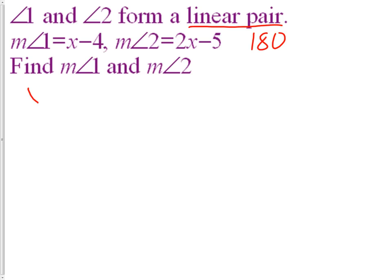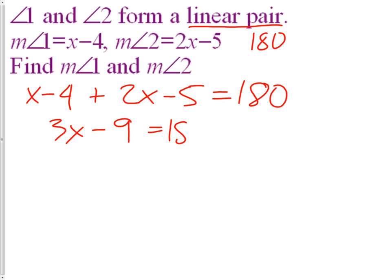So we're going to take angle one, x minus 4, add that to angle two, 2x minus 5, and that should be 180 degrees. Now it's time to solve. x plus 2x is 3x. Negative 4 minus 5 equals negative 9, so 3x minus 9 equals 180. Add the 9, and we finally have 3x equals 189.